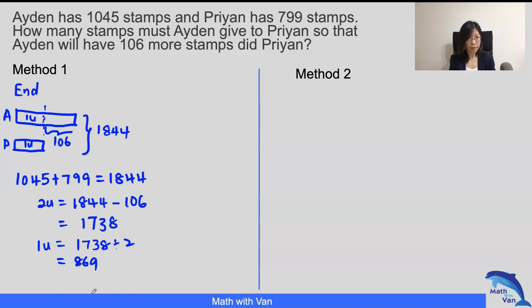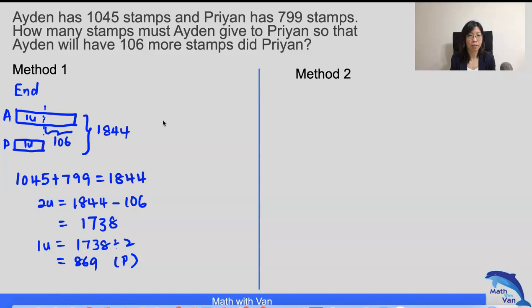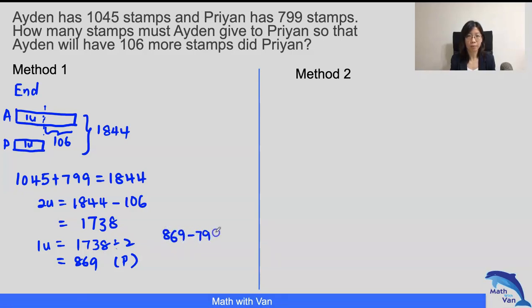So this is in fact what Brian had in the end. And if we know that in the end he had this many stems, what was the amount given to him from Aiden? Minus 799, and we will get our answer of 70. So our answer is 70 using this approach.